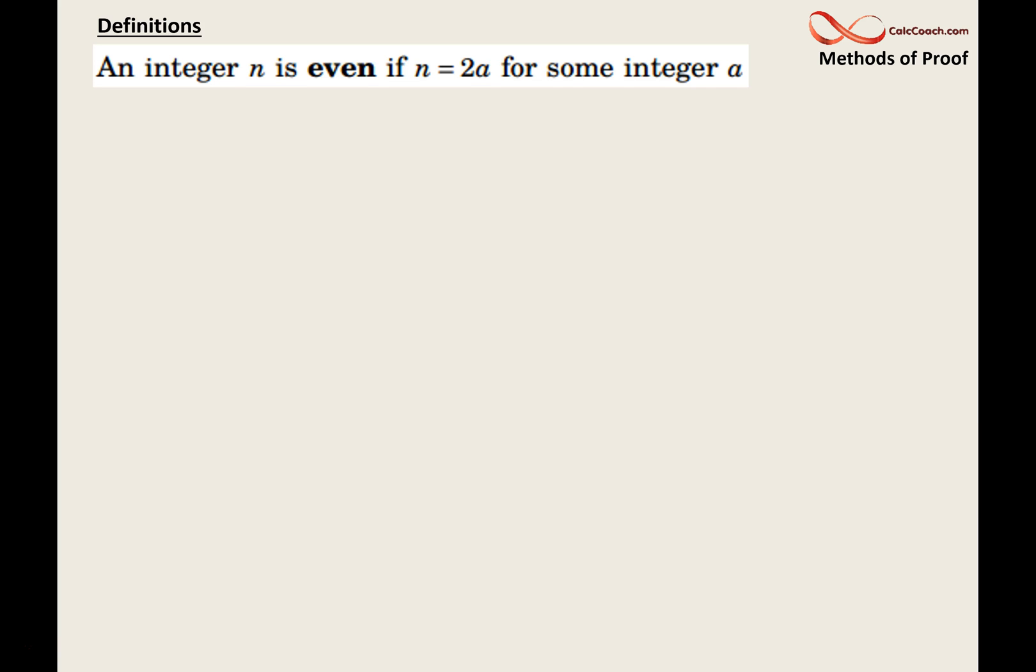An integer n is even if n = 2a for some integer a. And so 8 is even because it can be written as 2 times 4. Officially, that's what it means to be even. So when it comes up in a proof that a number is even, we can then go from definition and rewrite that number as 2 times some other integer.